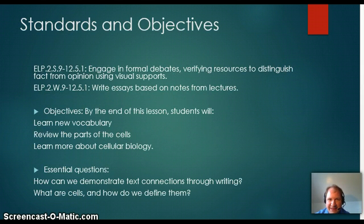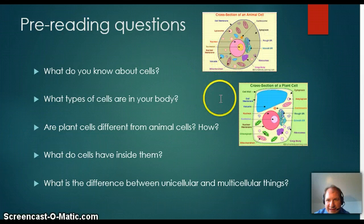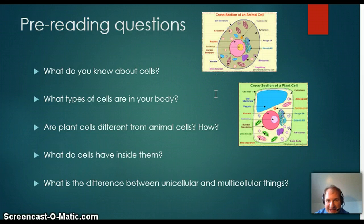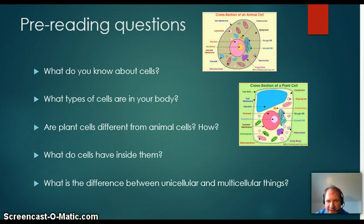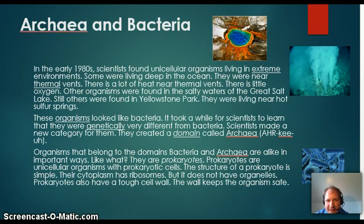We're doing things very basic here. We're going to start by taking a look at cells. These will come up in every science class — the kinds of cells in your bodies, how plant cells are different, what cells have inside them, the difference between multicellular and unicellular things. We're going to have a reading, and there will be questions on this.